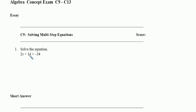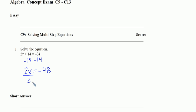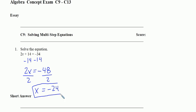Let's go ahead and look at number 1. We're going to solve the equation. First thing we're going to do is subtract 14 from both sides. That'll leave us with 2x equals negative 34 minus 14, which should be negative 48. Then we'll divide both sides by 2. The result is x equals negative 24. We can plug that in to check — negative 2 times negative 24 plus 14 equals negative 34, and it does.